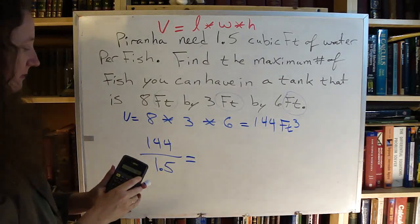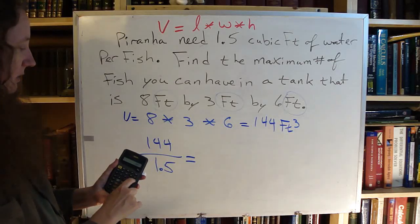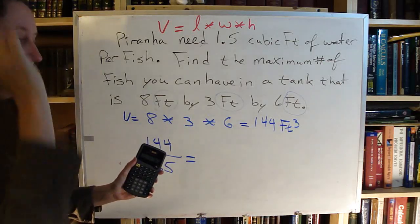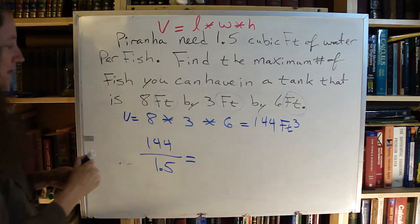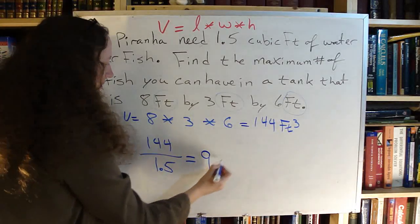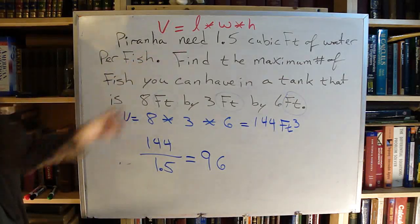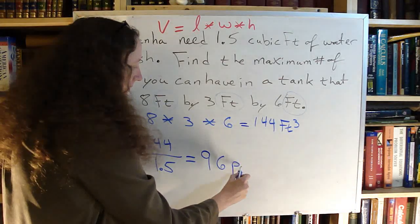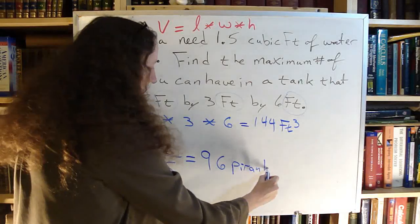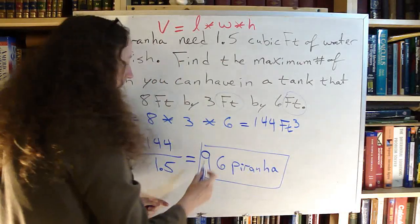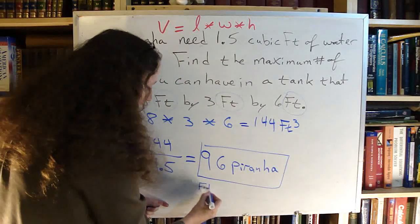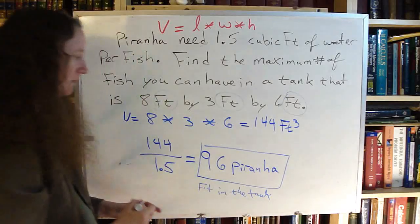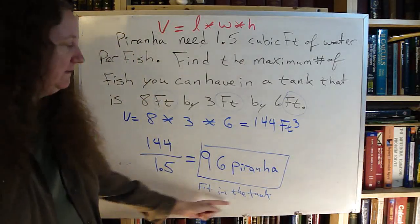Grab my calculator again. 144 divided by 1.5 equals 96. So that was 96 piranha. You need to include your unit in there. So 96 piranha fit in the tank.